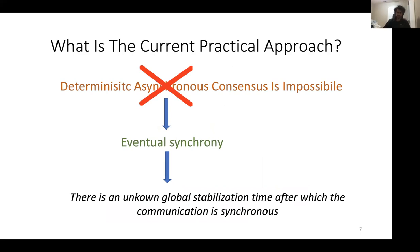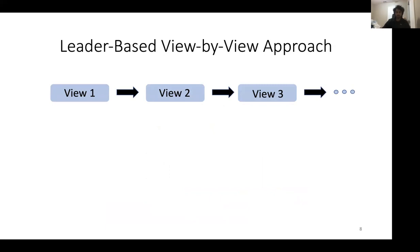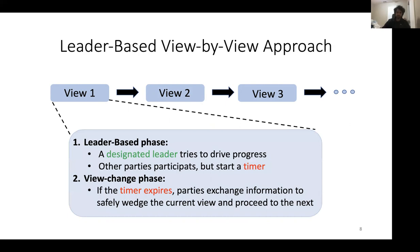Under this model, the protocol usually operates in a view-by-view manner where each view is divided into two phases. In the first phase, there is a designated leader that tries to drive progress; other parties participate but start a timer. If the timer expires, parties move to the view change phase in which they exchange some information in order to safely wedge the current view and proceed to the next.